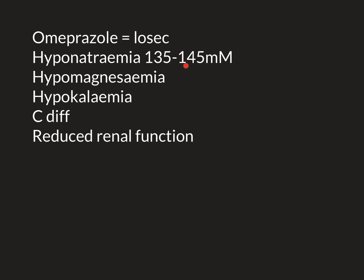Sodium is dissolved in all of the extracellular fluid and should be between 135 and 145 millimolar — 140 would be a brilliant value. Derangements in sodium concentration cause problems. Sodium can go too high, which is quite rare, or too low, which is much more common. When sodium becomes too low in the blood and extracellular fluid — which have the same concentration, measurable from a blood sample — we call that hyponatremia: hypo meaning low, natri meaning sodium, and emia meaning in the blood.